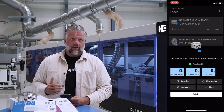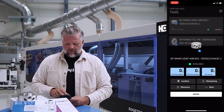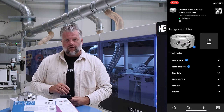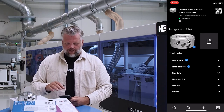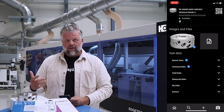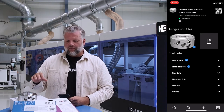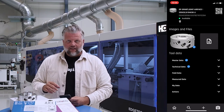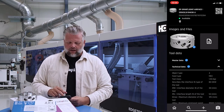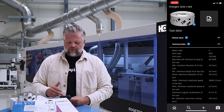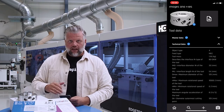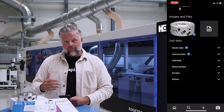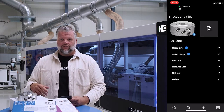In the detail view, blue checkmarks indicate integrated partners by tapio — for example Leuco, AKA, AGFA, or Kanefusa — who have sent data directly into the system. The tool card is fully digitalized in Twinio, meaning you have verified, certified data directly from the manufacturer.